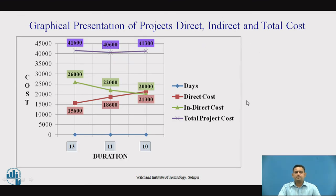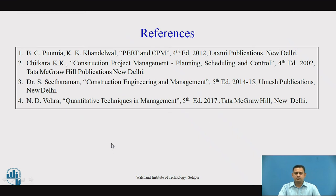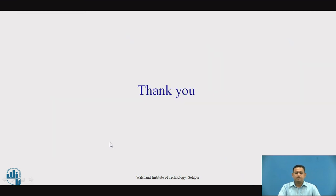This is the graphical representation of the overall total project cost as well as direct cost and indirect cost. The point of minimum total project cost is identified, with direct cost and indirect cost lines intersecting at a project duration of 11 weeks. These are the references for today's session. Thank you.